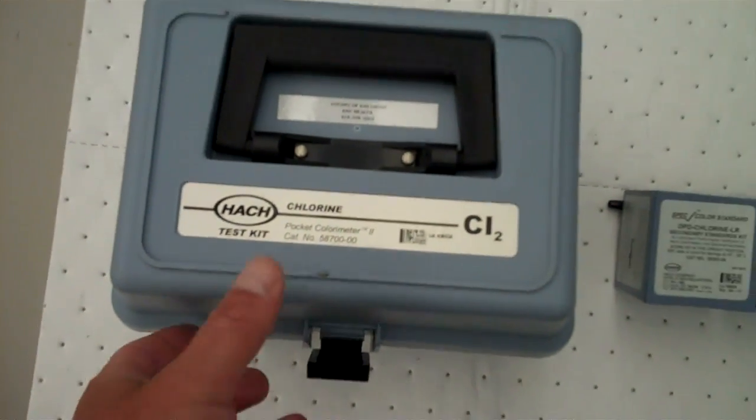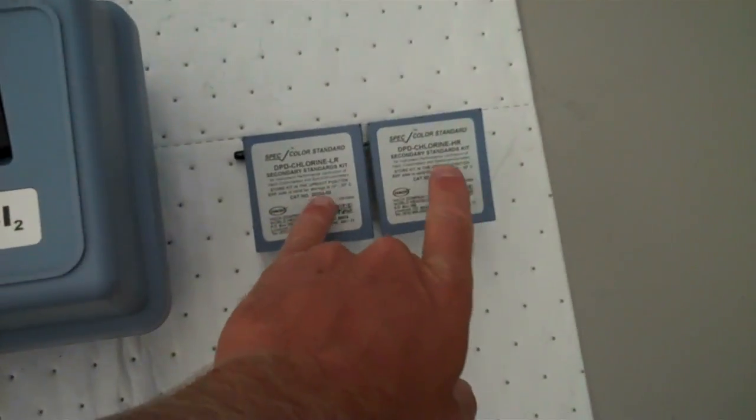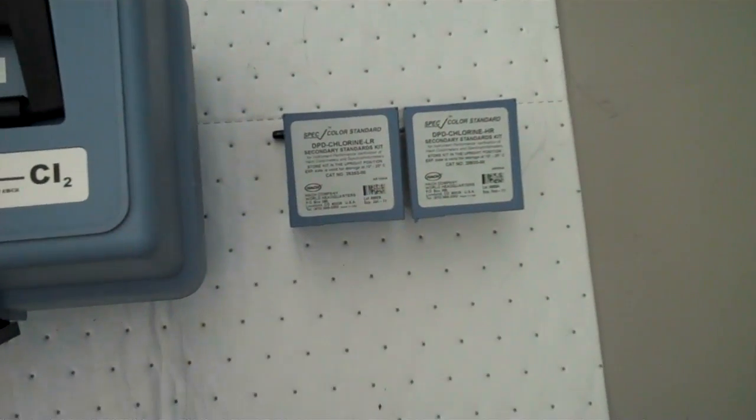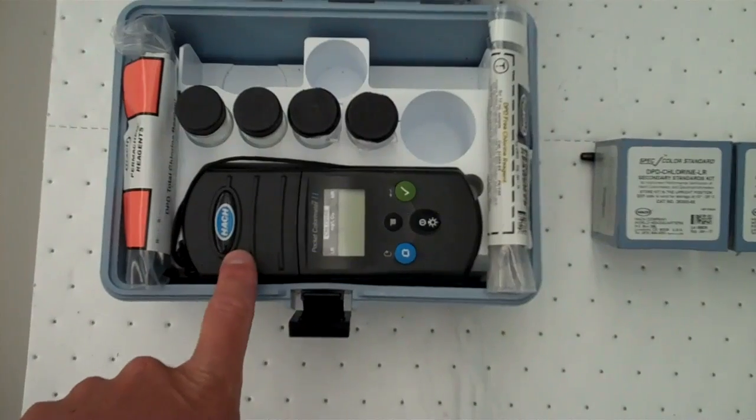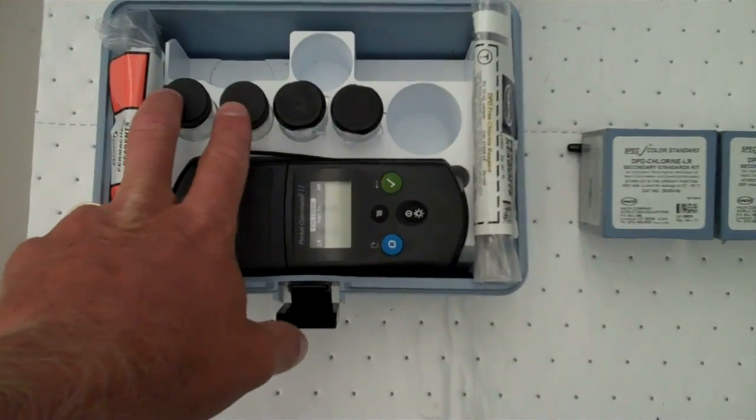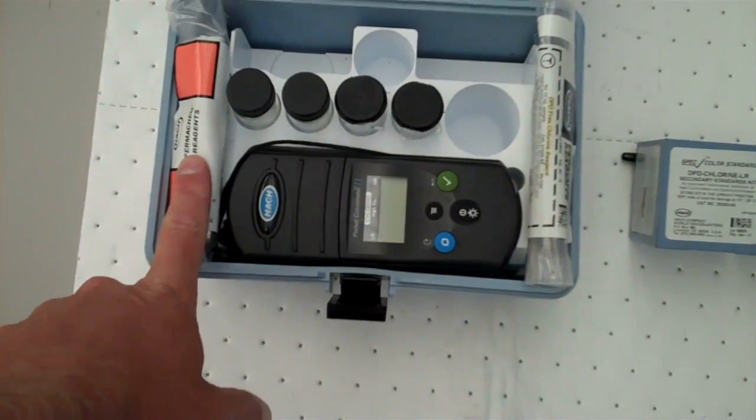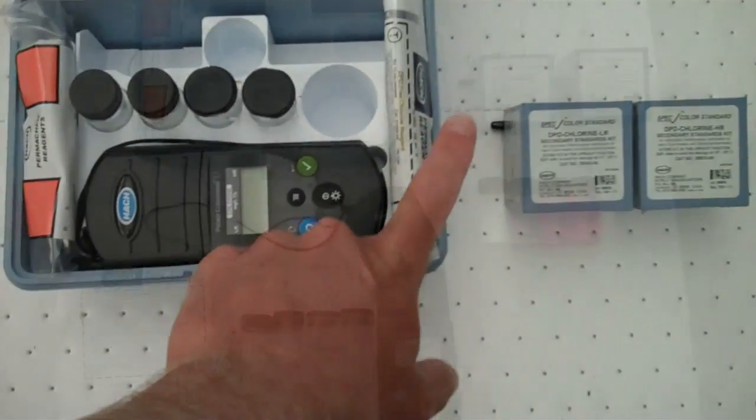This is the kit itself right here, and these are the two associated low standard and high standards. As you open up the kit, you can see the colorimeter here, associated glass vials, DPD reagents for total chlorine and free chlorine.